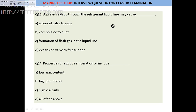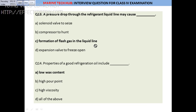Question 13: A pressure drop through the refrigeration liquid line will cause formation of flash gas in the liquid line. A pressure drop means there will be a formation of flash gas in the liquid line — that is the answer.